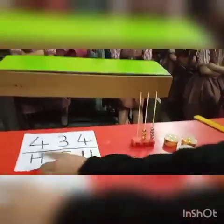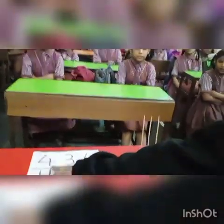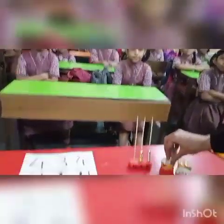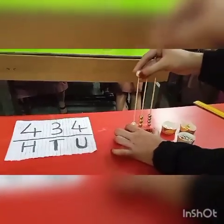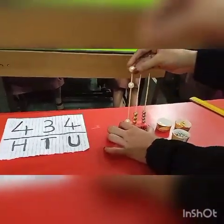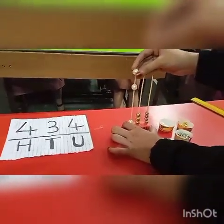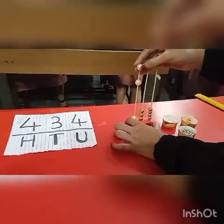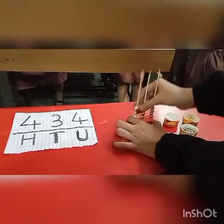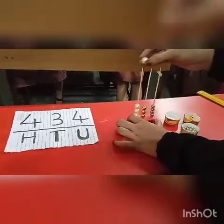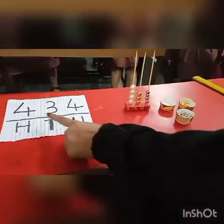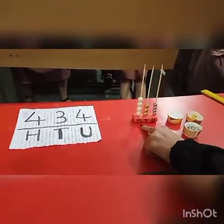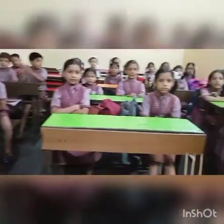On the hundreds place, we have the number four. Counting out four pulses: one, two, three, four. So the number is four hundred and thirty four.